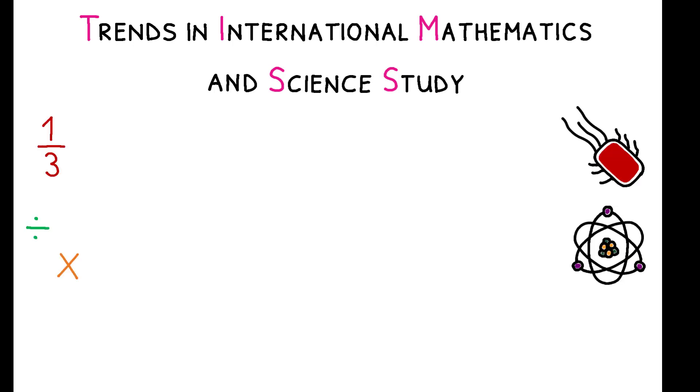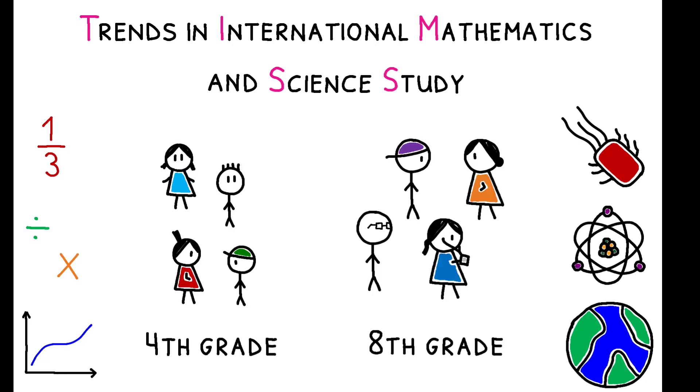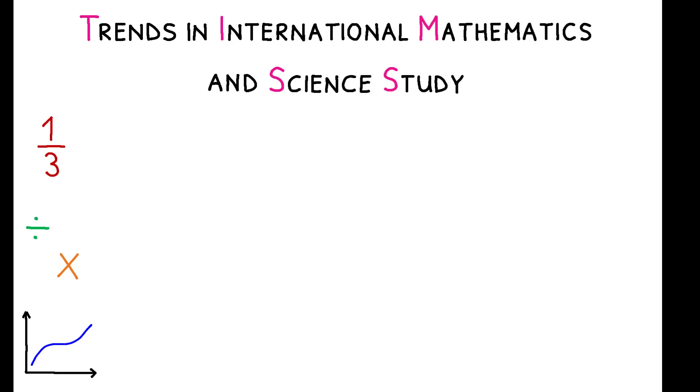The author investigates this using the TIMSS, an international standardized test in math and science that is administered to a random sample of fourth and eighth graders every four years. Monetary questions in the math section are identified by flagging terms such as money, buy, and sell. For the purpose of estimating the causal effect of financial salience, the TIMSS has a crucial feature.